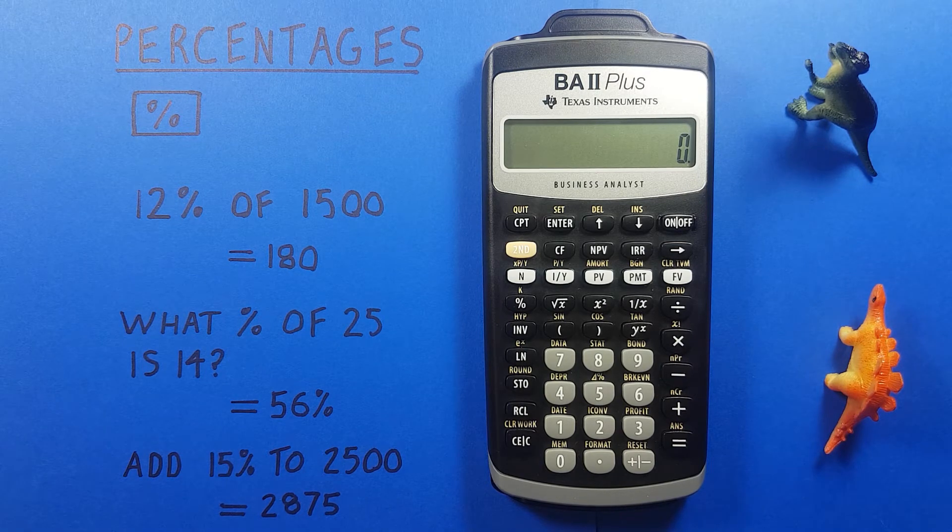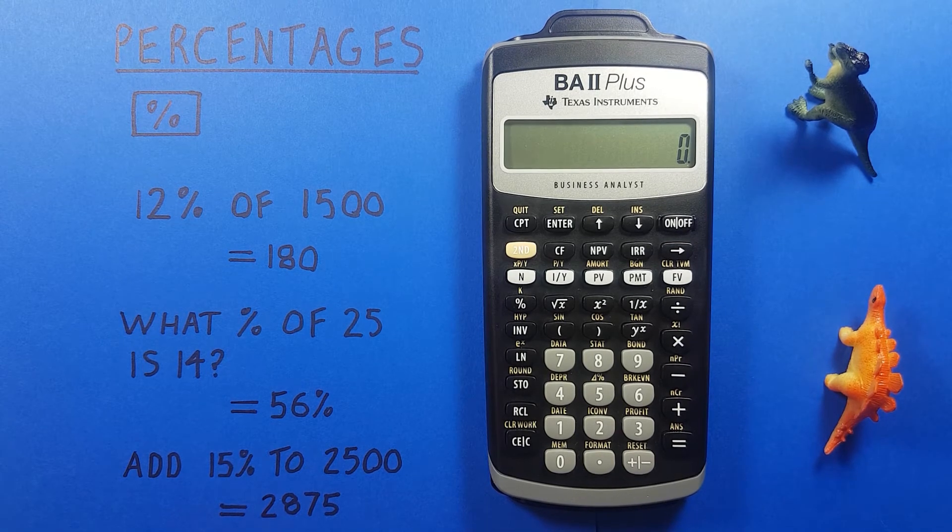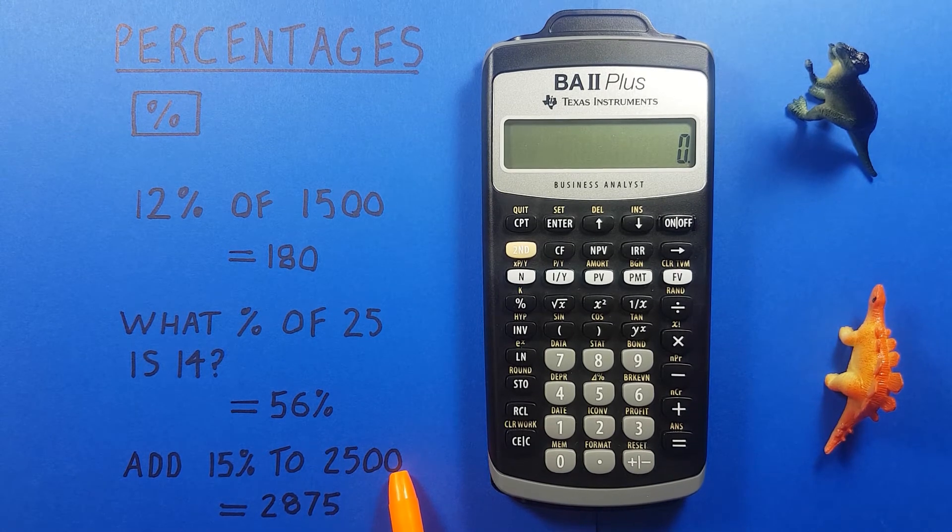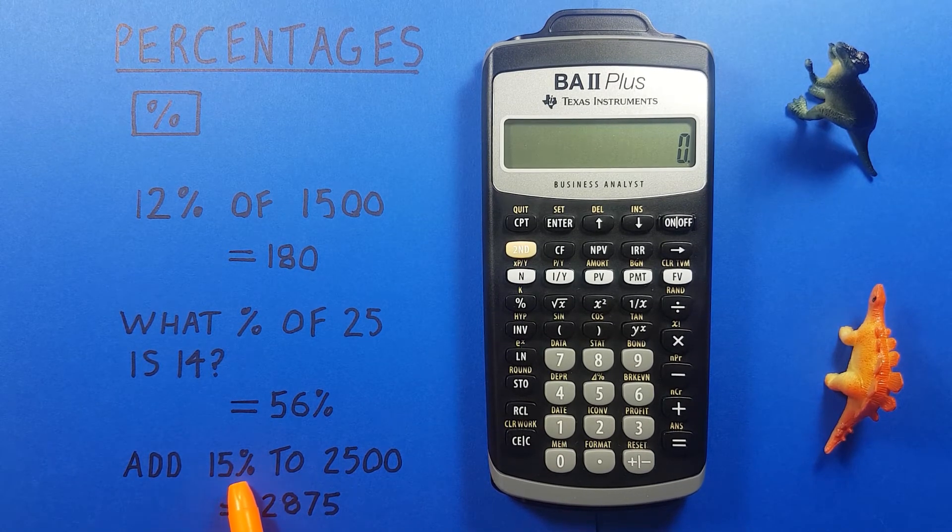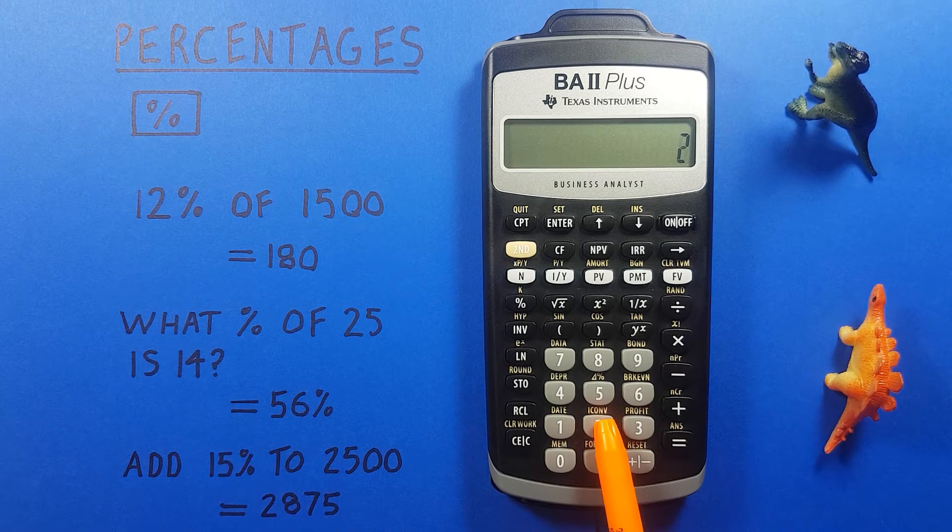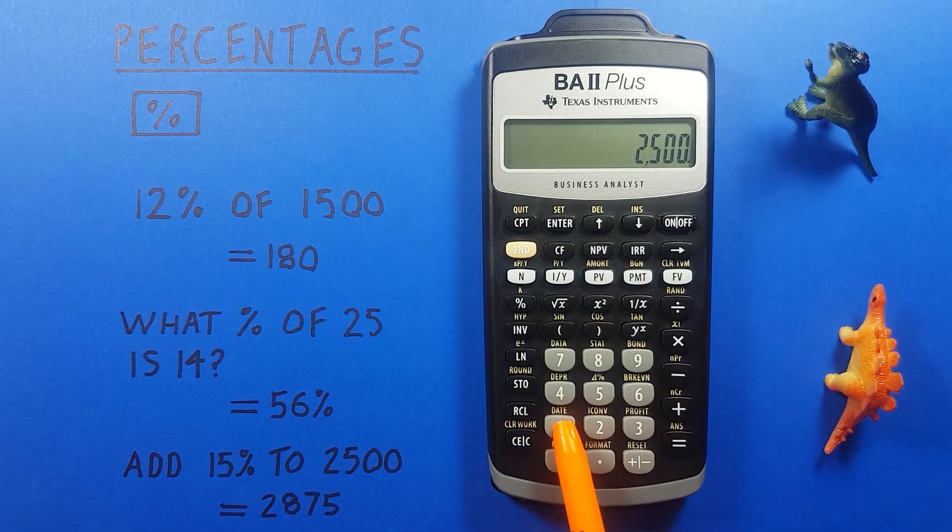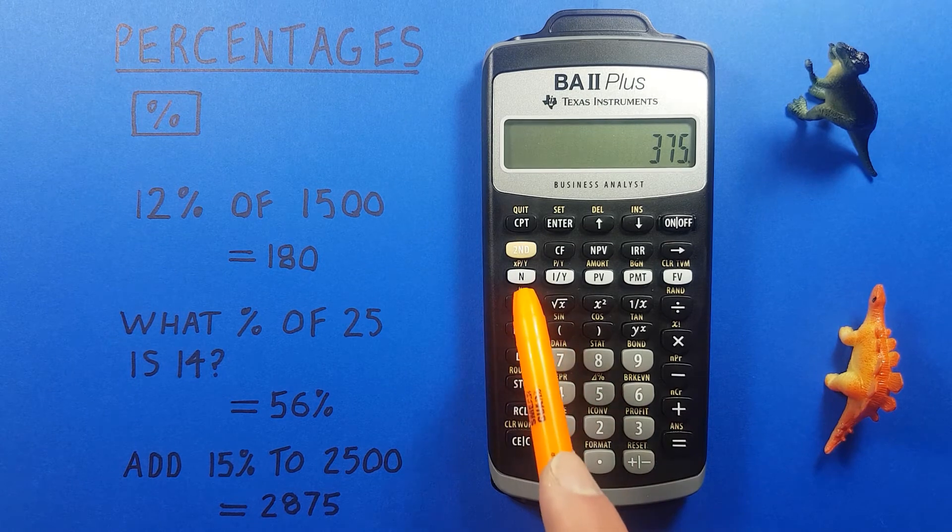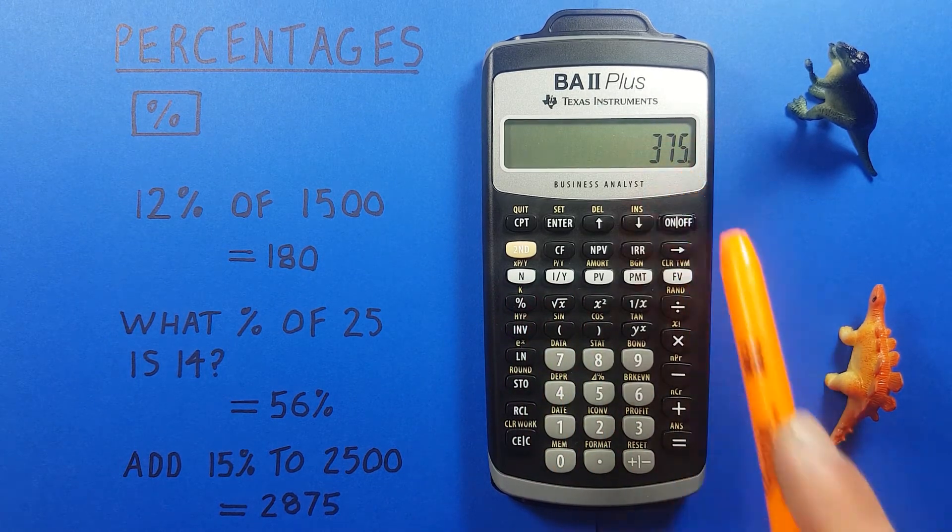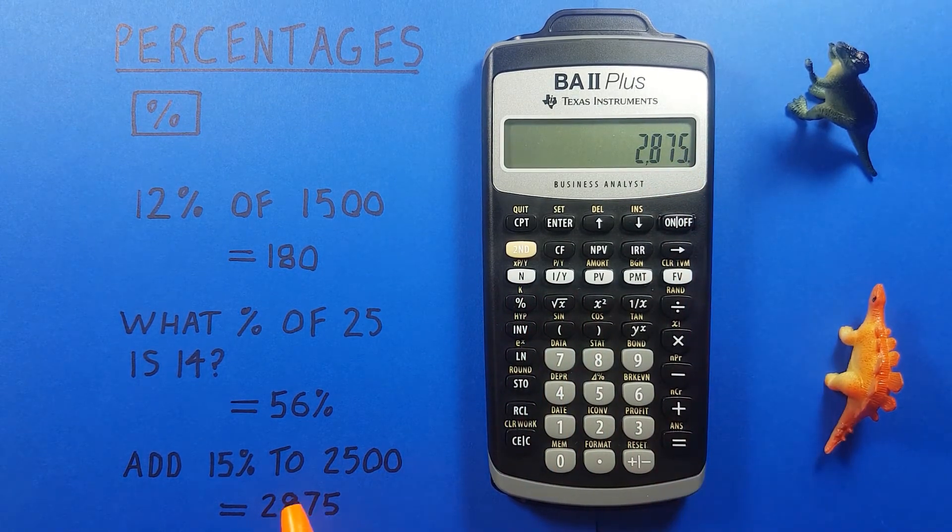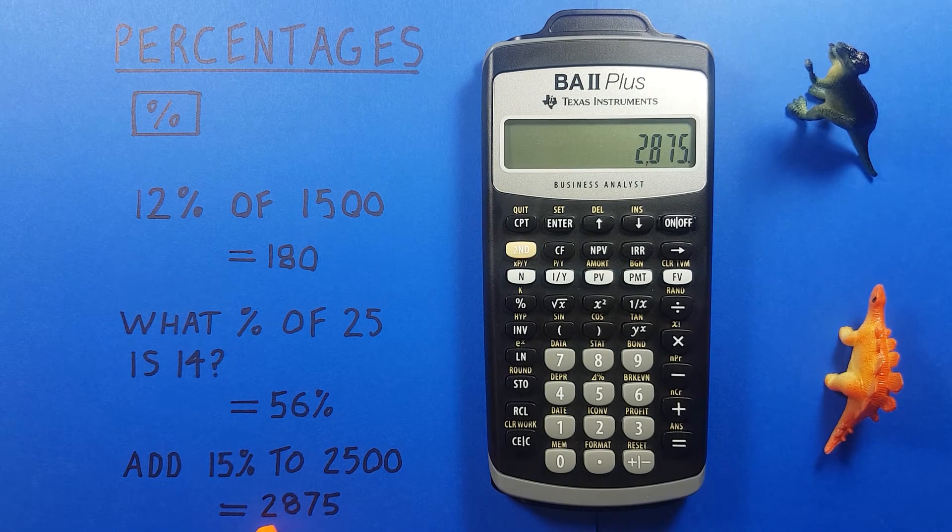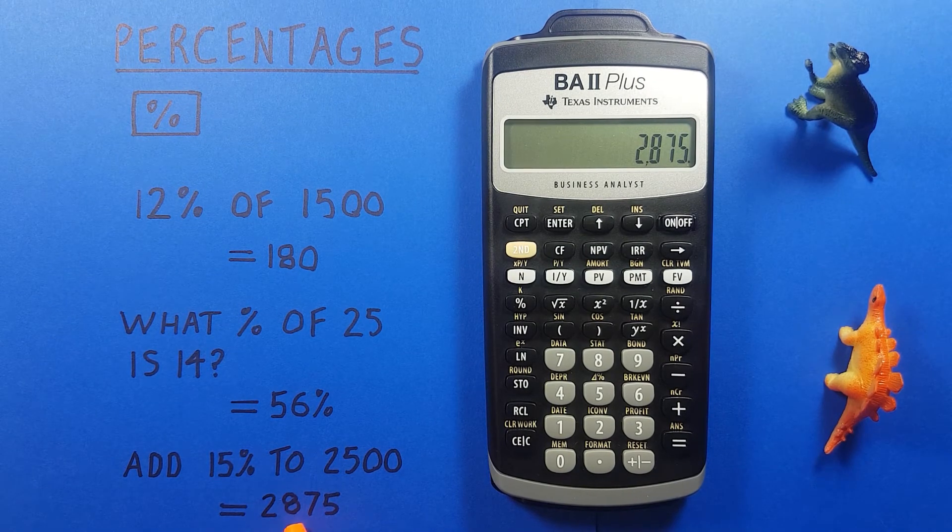So for example if we wanted to find out what the cost of an item that initially cost $2,500 with 15% taxes on would be we would enter the 2500 and then plus 15 hit the percentage key and press equals and we see the cost of the item with 15% taxes would be $2,875.